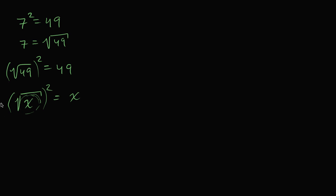Typically, and as you advance in math you're going to see this will change, but typically if you're going to take the square root of something, x has to be non-negative. This is going to change once we start thinking about imaginary and complex numbers. But for the principal square root, we assume whatever's under the radical is non-negative, because it's hard to square a number and get a negative number. So for this to be defined, we need a non-negative number under the radical.